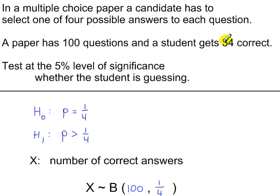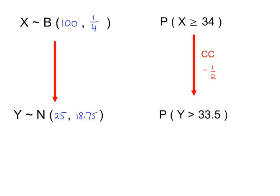Our test statistic is 34. Because we're looking for an increase in the binomial distribution, we would have worked out the probability that X is greater than or equal to 34. So we apply a continuity correction, we subtract a half, so we're now looking for the probability of greater than 33.5 using this normal distribution.